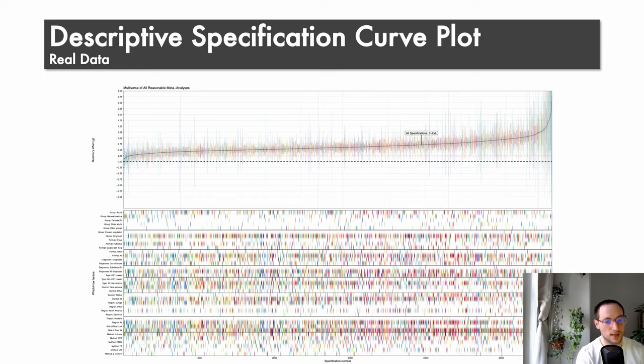Here is an example from an ongoing research project where we actually plot over 5,000 meta-analyses in a single plot to answer questions that are relevant for psychotherapy research. So it becomes quite overwhelming, but this plot helps us a lot in finding patterns and understanding how robust our evidence actually is.